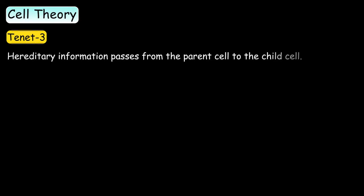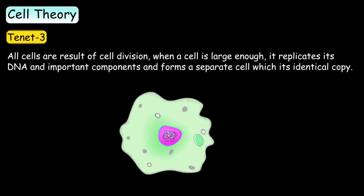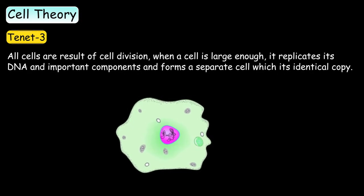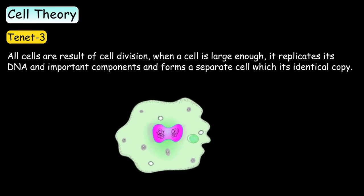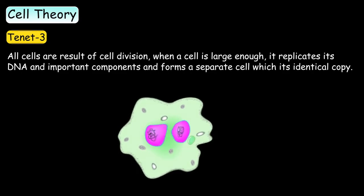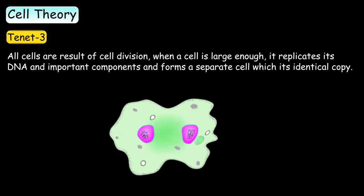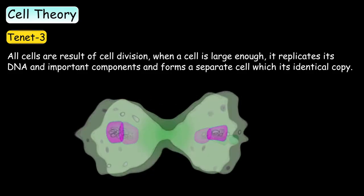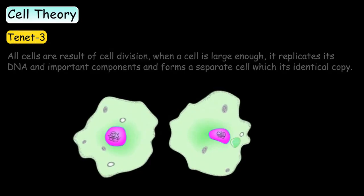Hereditary information passes from the parent to the child's cell. All cells are the result of cell division. When a cell is large enough, it replicates its DNA and its important components and it then forms a separate cell which is its identical copy.